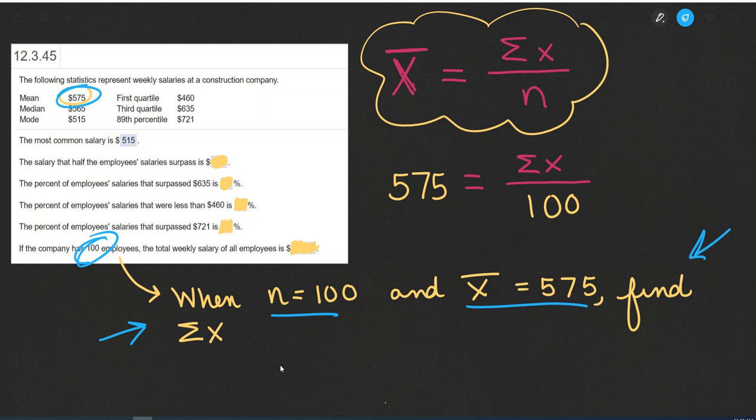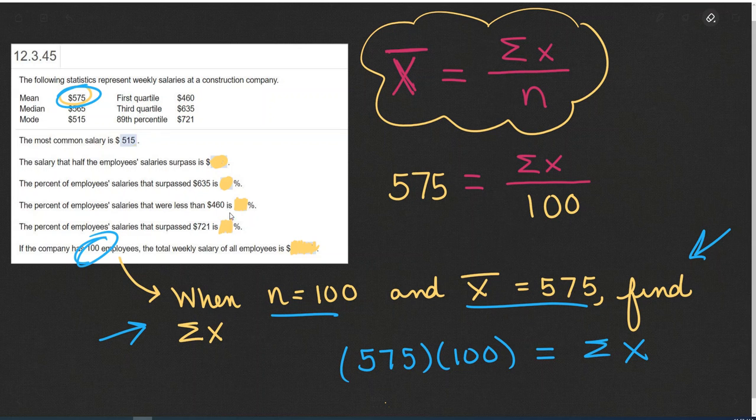And the way we could approach this is cross-multiplying, so 575 times 100 would give us the sum of all the X's. That wraps up this activity.